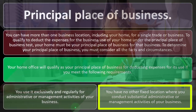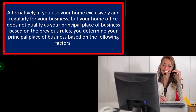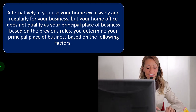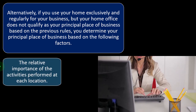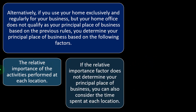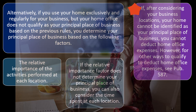Alternatively, if you use your home exclusively and regularly for your business but it doesn't qualify as your principal place of business under those rules, you determine your principal place of business based on: the relative importance of the activities performed at each location, and if that doesn't determine it, the time spent at each location. If your home still cannot be identified as your principal place of business, you cannot deduct home office expenses.